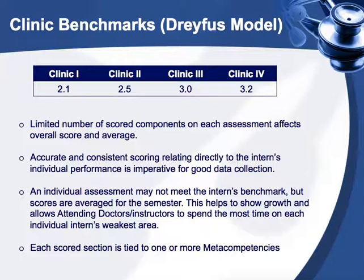Let's talk about some of the students' benchmarks. Their assessments must average at or above these benchmarks by the end of the trimester in order to move on to the next clinic. In Clinic 1, the benchmark is a 2.1 — just slightly in the advanced beginner range. Clinic 2 is a 2.5, which is in the middle of advanced beginner and on their way to competent. Clinic 3 or trimester 9 students are measured at the competent level at a 3.0. Lastly, in Clinic 4 or trimester 10 students, they are above competent, moving towards proficiency at a 3.2.